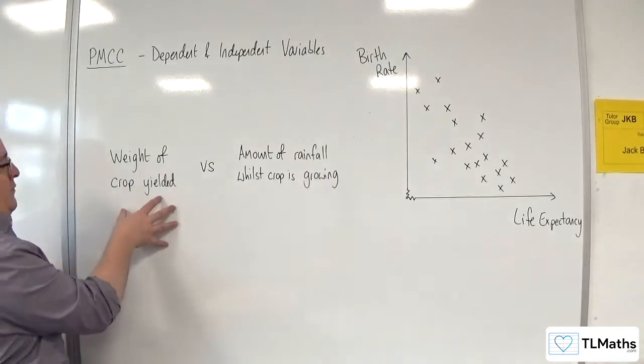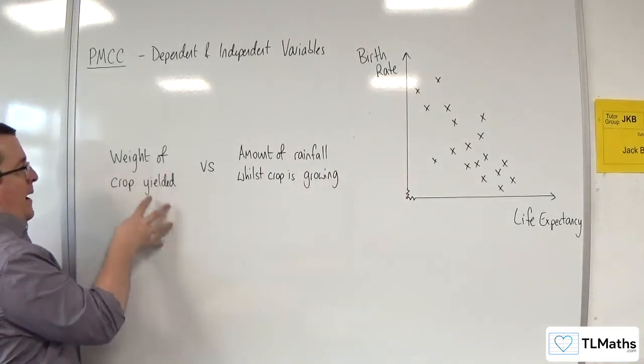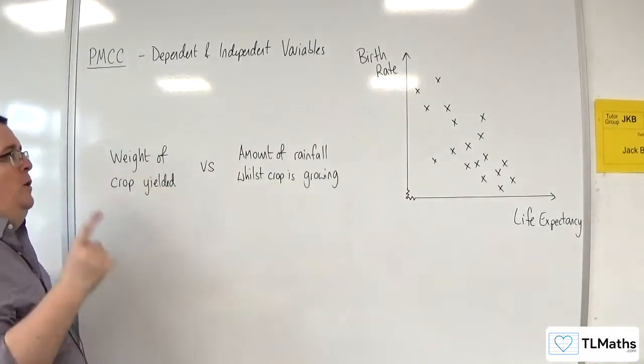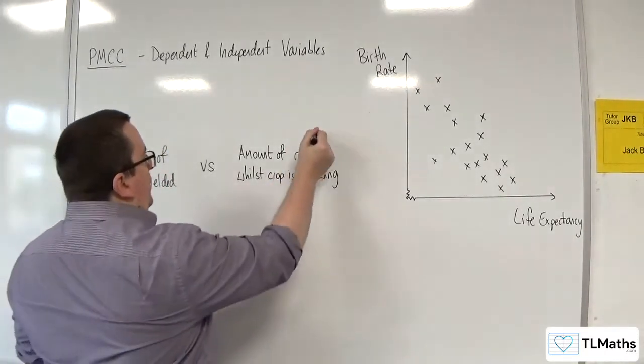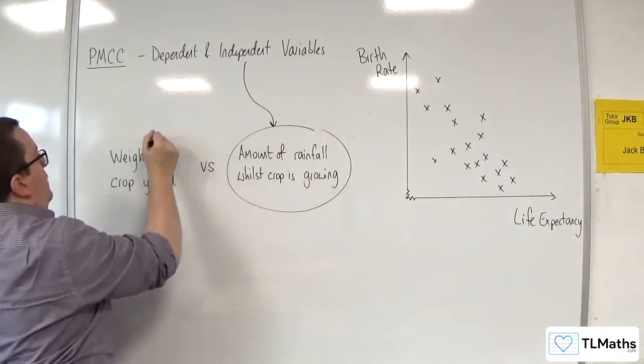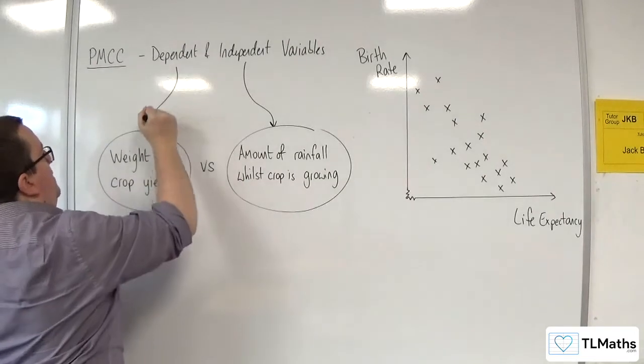So, clearly, the weight of the crop yielded depends on the amount of rainfall. It's that way round. Which means that this is the independent variable and this one is the dependent variable.